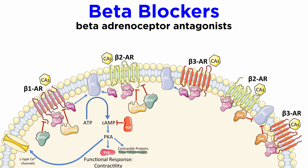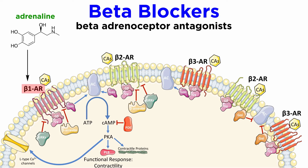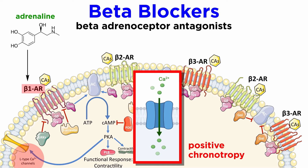Beta blockers are a popular term for beta-adrenoceptor antagonists. These antagonize adrenaline in the sympathetic nervous system from activating beta-adrenoceptors. Normally, adrenaline activates the beta-1 adrenoceptor in the myocardium and increases heart rate through direct action by activating calcium channels, which leads to a greater influx of calcium ions following membrane depolarization, a process known as positive chronotropy.